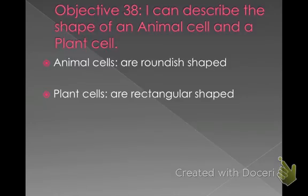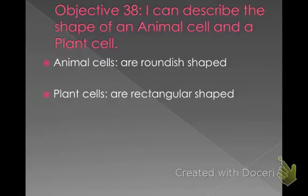This is Objective 38: I can define the shape of an animal cell or a plant cell. Animal cells are more rounded-shaped, while plant cells are more rectangular-shaped. They are not always perfect circles or perfect rectangles, but they are mostly that shape. That's one of the ways you can tell a plant cell from an animal cell.